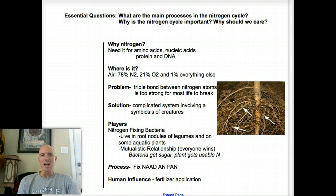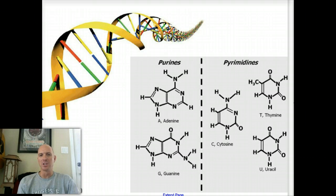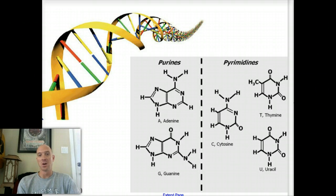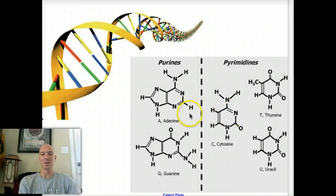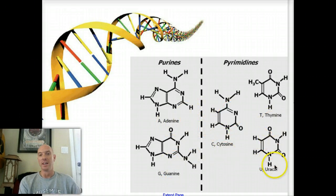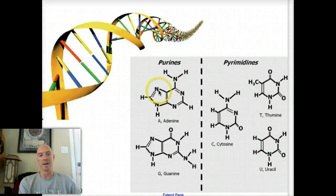Why is nitrogen such a big deal? We're going to start with that. The reason is, if you remember from your biology days, DNA contains nitrogen. If you take a look at our different types of base codes — the adenine, the cytosine, the guanine, the thymine, even uracil — they all have a nitrogen atom in there multiple times.